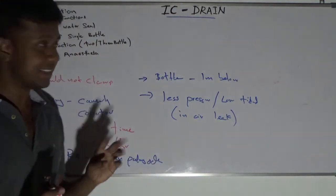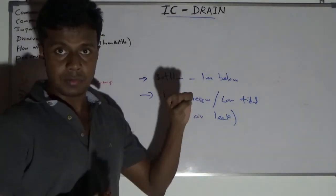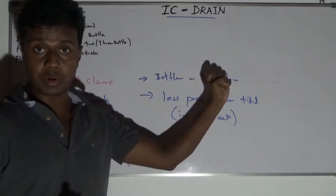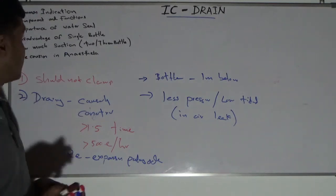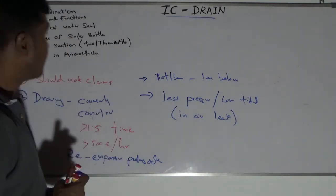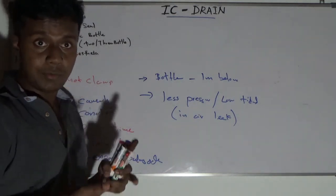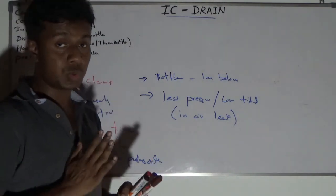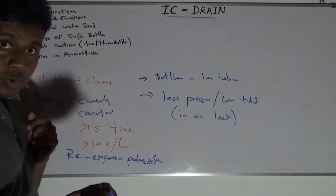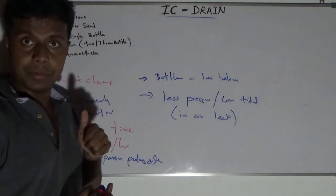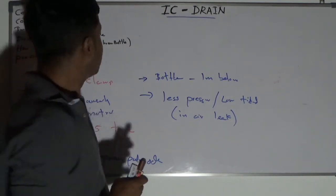That is a simple overview regarding the IC drain system. To highlight again: there is a one-bottle system, two-bottle system, and three-bottle system. You now know the indications, the parts of the system, the importance of the water seal — how much water column should be there, why it should not be more or less than that — and how much suction to apply and why that suction value matters.